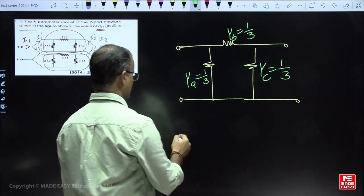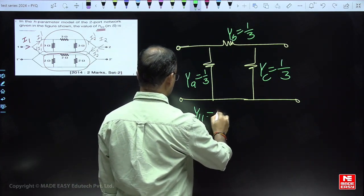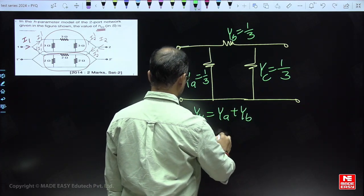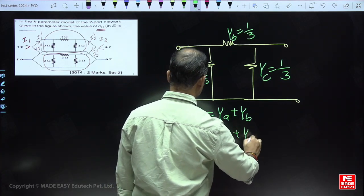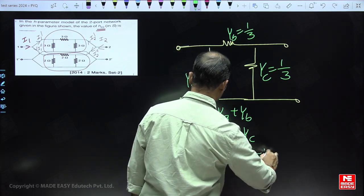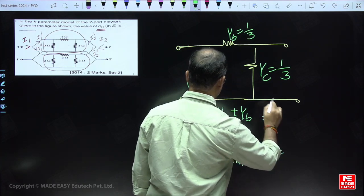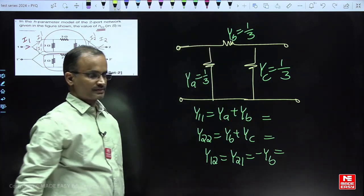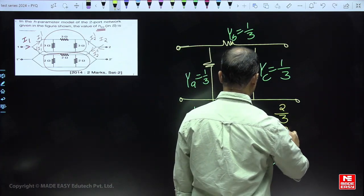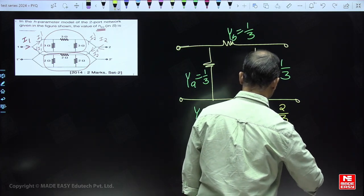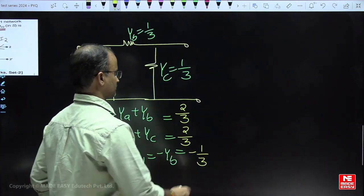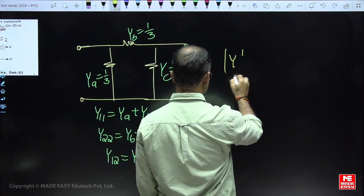For a pi-network, we go with the standard formulas. What is Y11 equal to? Writing the respective values, we obtain the Y parameters corresponding to the first two-port network. We name these as Y-dash.